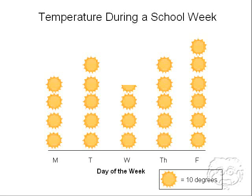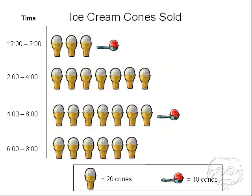This pictograph only uses one symbol in the image key, but some pictographs use more than one. Here's a pictograph that shows how many ice cream cones were sold based on the time of day at an ice cream shop, and you can see this uses two symbols. The symbols represent the same thing — the number of cones sold — but they represent different quantities. The cone with the ice cream represents 20 cones, and just the scoop in the spoon represents 10 cones. You can see that in the image key at the bottom of the pictograph, which tells you how to interpret or read the pictograph.